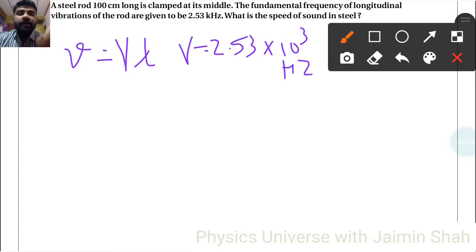Now lambda we have to find. So for longitudinal vibration, length is lambda by 2, so lambda equals 2 into L. Now L here is 1 meter because it is given as 100 centimeter. So 2 meter will be the wavelength.